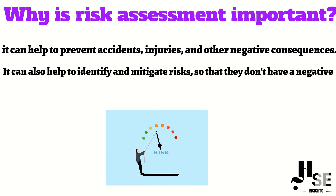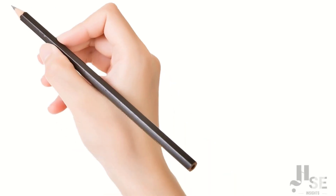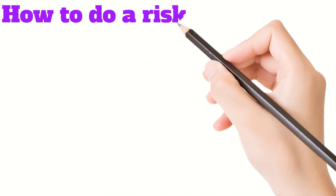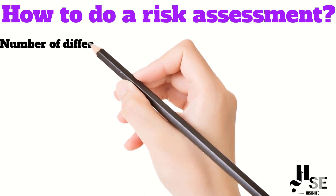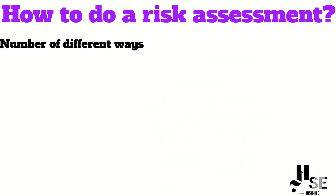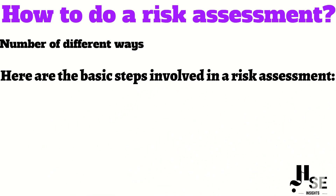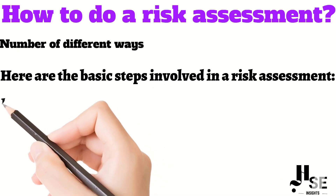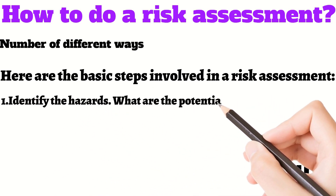How to do a risk assessment: there are a number of different ways to do a risk assessment. The most important thing is to follow a systematic process and to be thorough. Here are the basic steps involved in a risk assessment. Number one: identify the hazards — what are the potential risks that could occur?